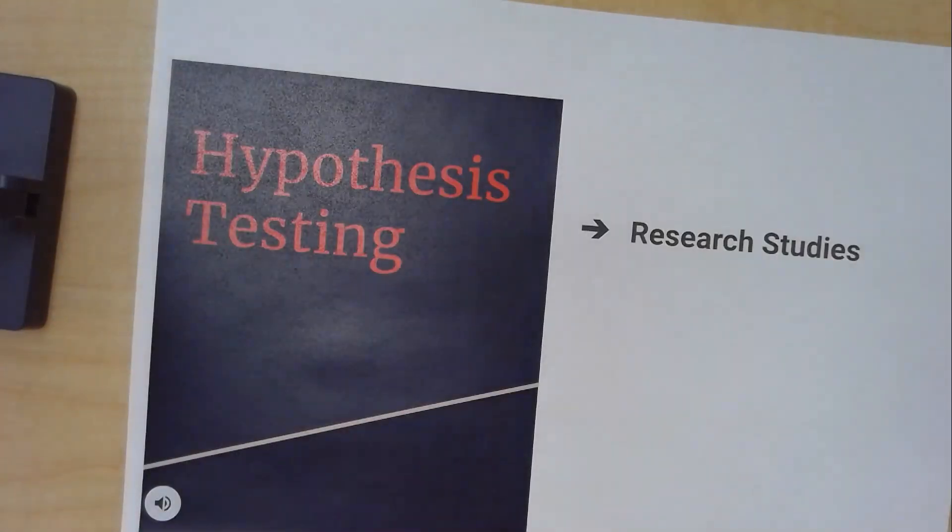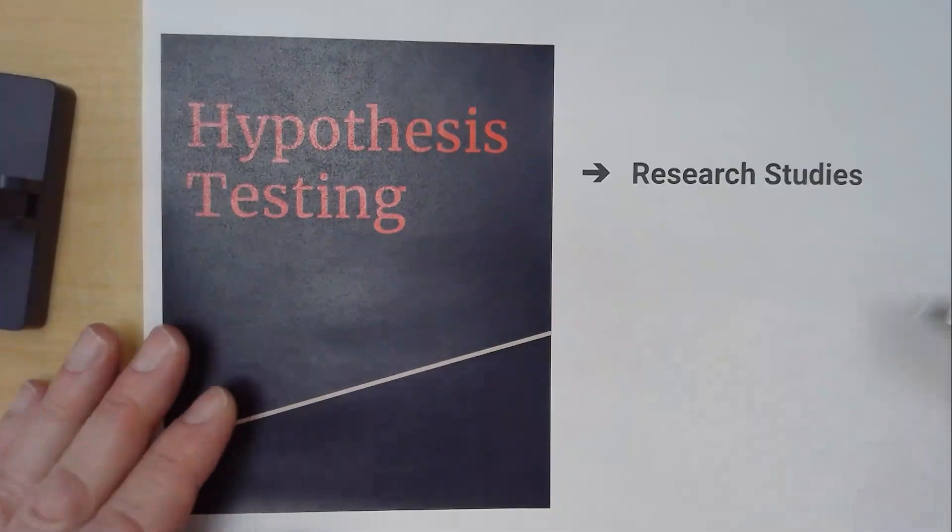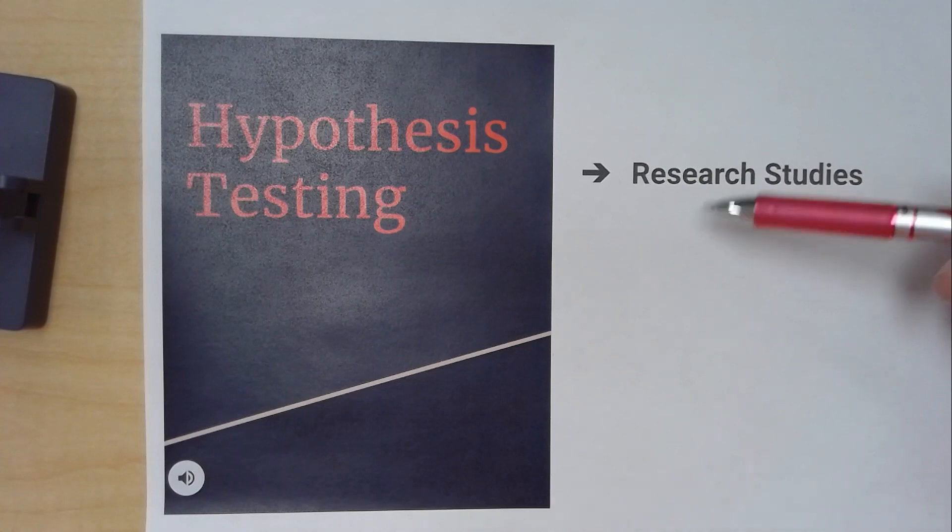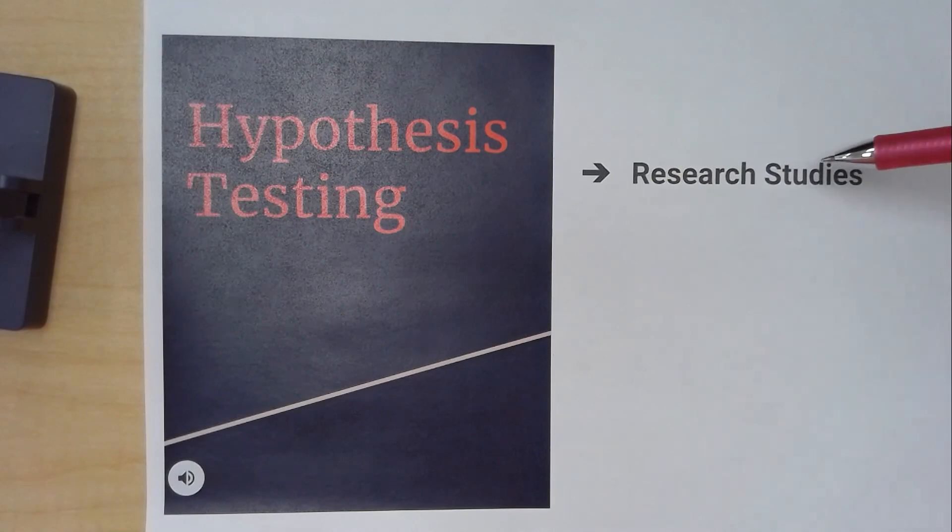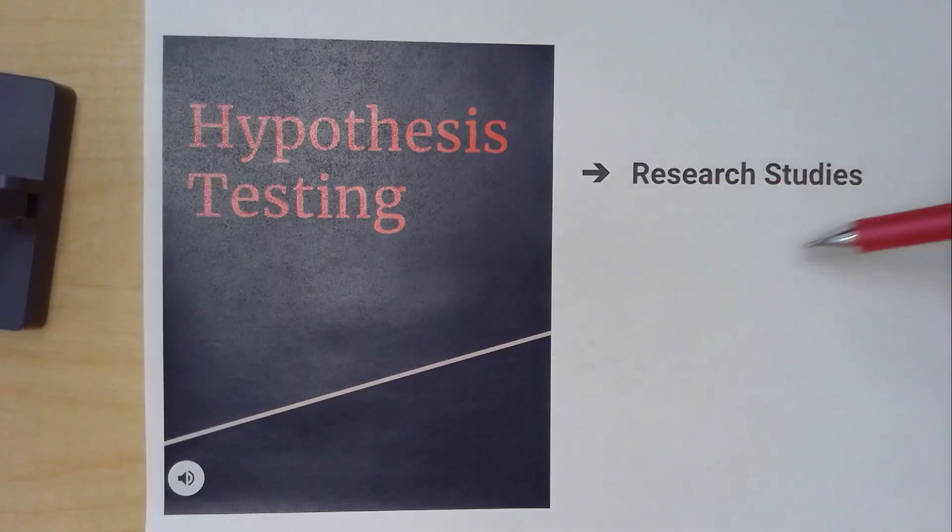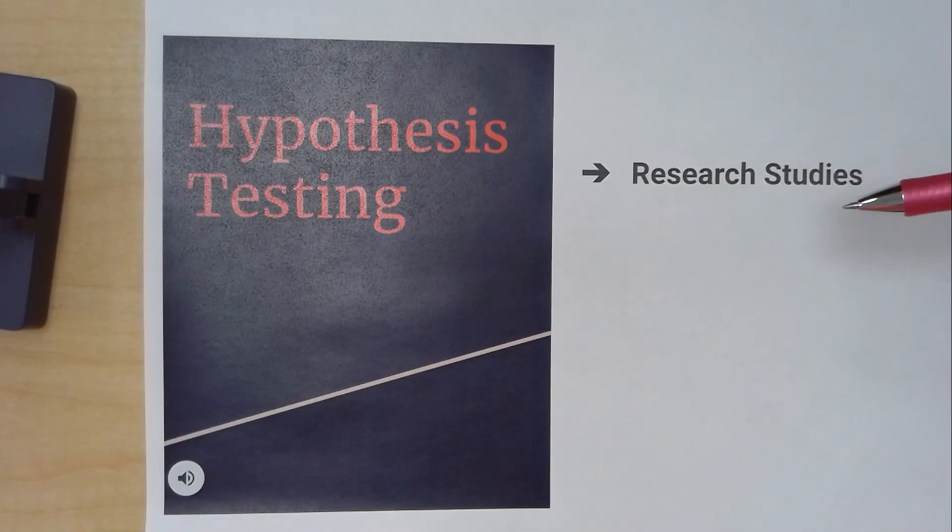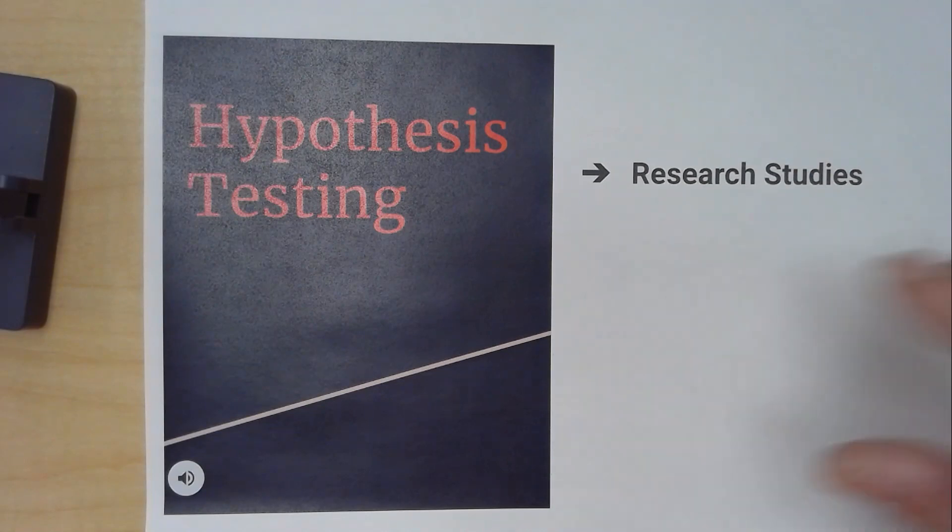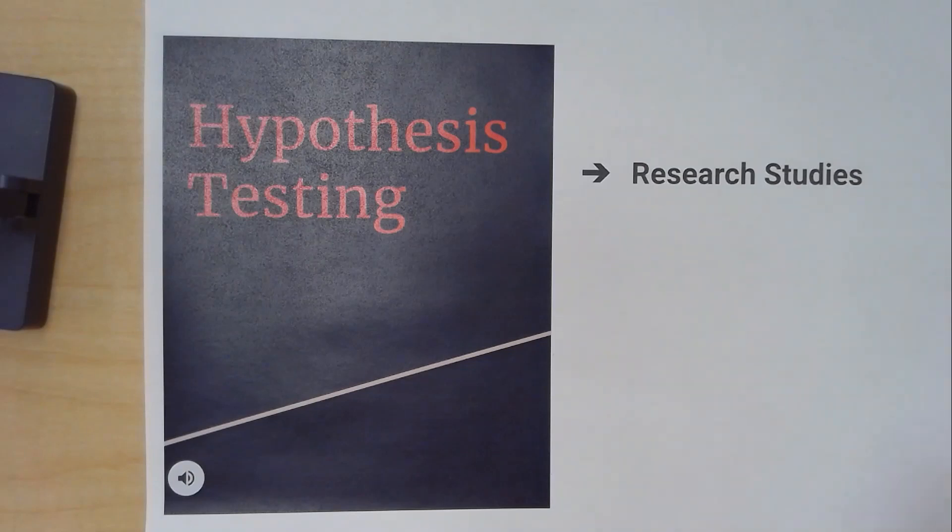The last topic in statistics is hypothesis testing, where we create a null hypothesis and an alternative hypothesis. This was related to research studies. My own daughter looks at research studies to figure out whether a different kind of strategy works with children that have speech issues, because she's a speech therapist. They do like a science experiment and then they come up with a probability that says whether the research was effective or not effective, and there's a probability associated with that.